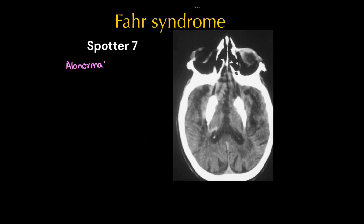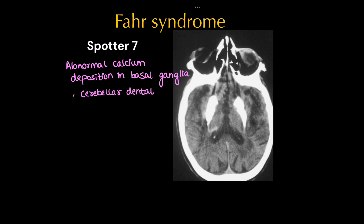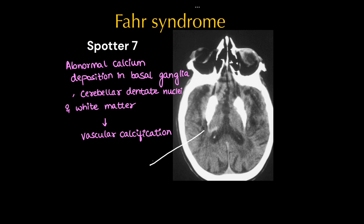This is a case of Fahr syndrome, where we can see abnormal calcium deposition in bilateral basal ganglia. The deposition will also be in the cerebellum, that is in the dentate nucleus, and in the white matter. These are vascular calcifications. In advanced stages, we can see symmetrical calcification of bilateral basal ganglia, and white matter calcification can be seen in later stages.